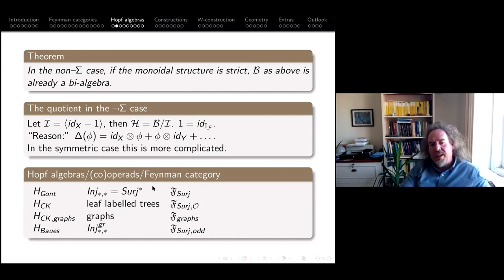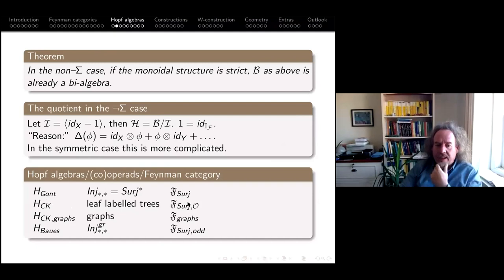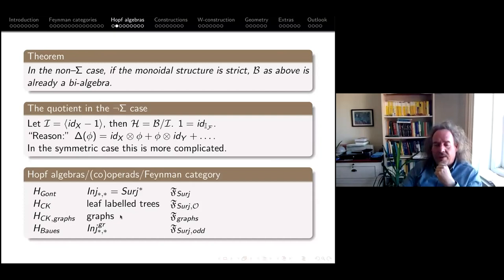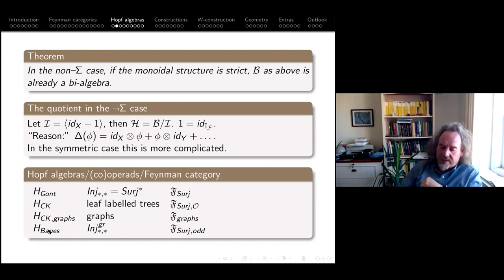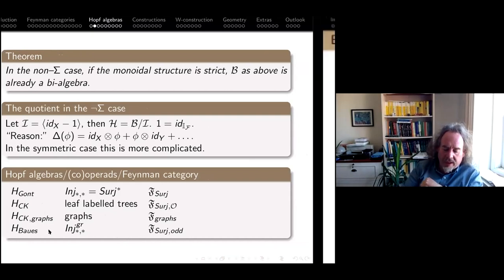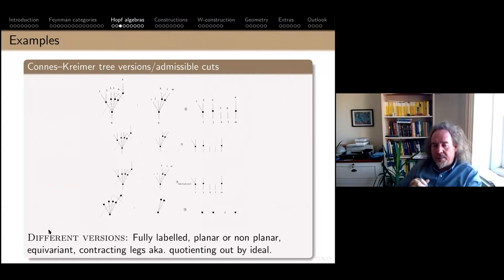The incredible thing when we computed these things is: I can feed in different suggestions and get out specific Hopf algebras. I get the Goncharov-Hopf algebra for multi-zeta values; putting in leaf-labeled trees gives the Connes-Kreimer Hopf algebra of trees; using the graph category gives the Connes-Kreimer graph algebra. Most surprisingly, for another example here — taking care of signs — I get a Hopf algebra that Baues invented in a completely different setting to study double loop spaces. So there is a simplicial structure hidden in the Connes-Kreimer algebra.